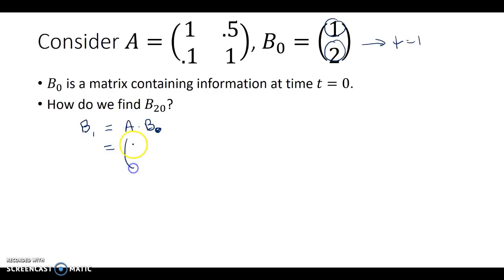If we carry out this operation, we get the matrix 1, 0.5, 1, 1 multiplied by 1, 2. That comes out to be 1 times 1 plus 2 times 0.5, which is 2, and 1 times 0.1 plus 2 times 1, which is 2.1. So now we have information at time B1. The two values at time t equals 1 are now 2 and 2.1. Both have grown - the first component doubled and the second component grew by 0.1.